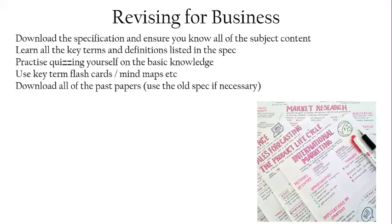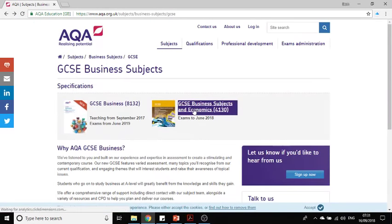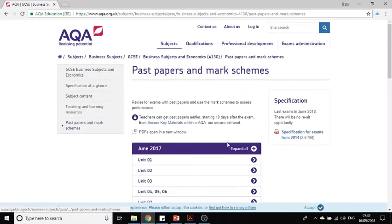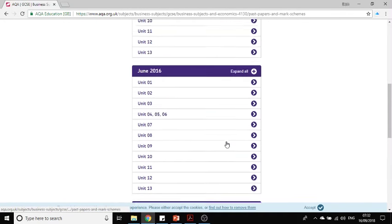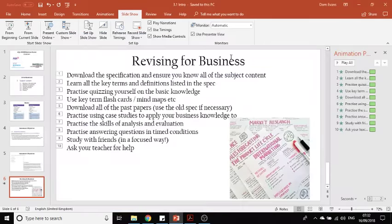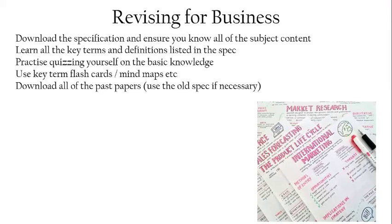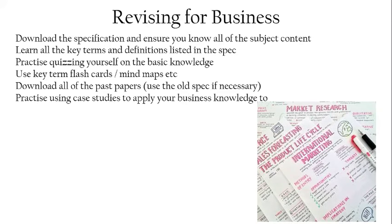You should download all of the past papers. I'm recording this in 2018 and the first exams are in 2019, so there are no past papers yet — use the past papers from the old specification, accessible on the AQA website. You can find a few years' worth of past papers and mark schemes there, and sites like Physics and Maths Tutor also have quite a lot. Download all the past papers so you can practice applying your business knowledge to case studies and answering questions, which will make you more effective in the exam.